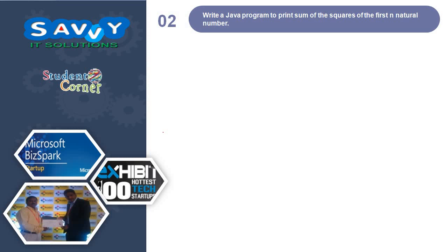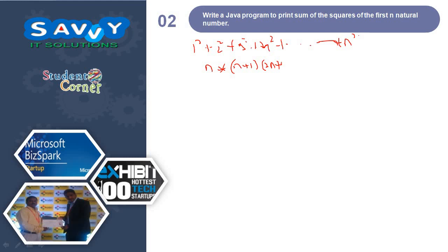Write a Java program to print the sum of the squares of the first N natural numbers — that is 1 squared plus 2 squared plus 3 squared plus 4 squared plus so on up to N squared. Here also we have a direct formula: sum equals N into N plus 1 into 2N plus 1, whole divided by 6.